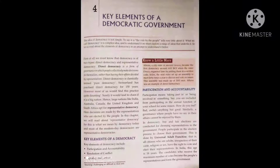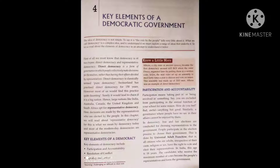What is direct democracy? Direct democracy is a form of government in which people collectively make decisions for themselves, rather than having their affairs decided by representatives. In direct democracy, people themselves choose their government. Direct democracy is classically termed pure democracy.